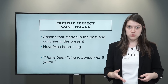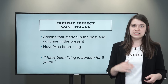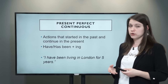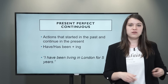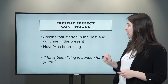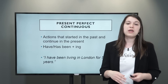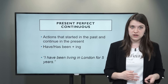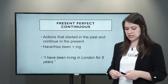The present perfect continuous — we use this to talk about actions that started in the past and continue in the present. We form it with have or has plus been plus the verb with -ing. Don't forget about the been here. For example: I have been living in London for five years. That means five years ago you started living in London, and if you still live there today it's still ongoing in the present.